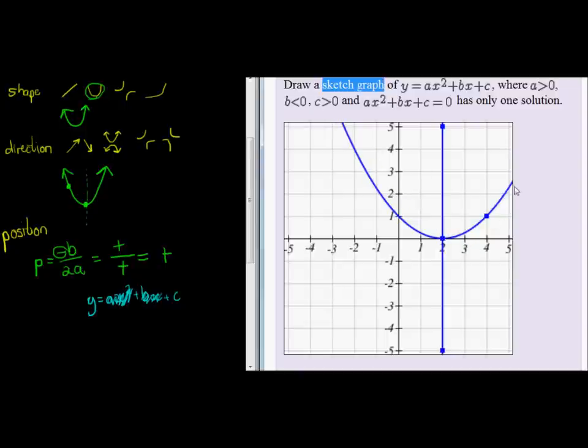We have a positive shape, a positive y-intercept, a positive symmetry axis, and we're cutting the x-axis only once, which means that this will only have one solution. And there we go, that should be fine.